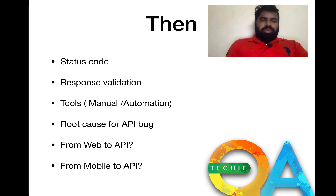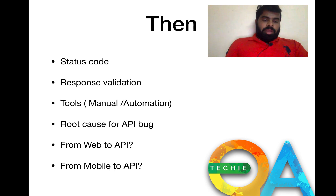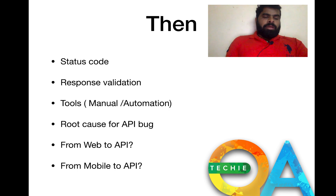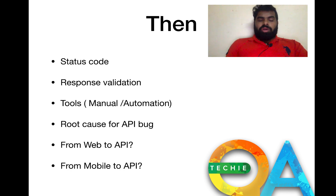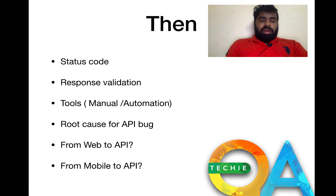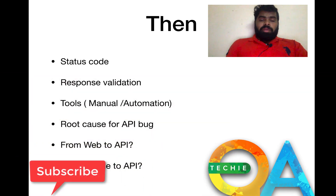There might be a question: 'I have given you a website — how do you do API testing for it?' First, check whether the site uses APIs or is just a static website. You can find this from the Network tab in your browser's Inspect Element — Chrome or any browser has a Network tab where you can see API calls.